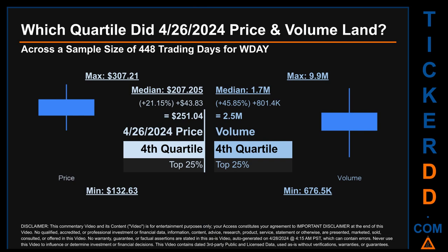Quartiles tell us about the spread of a data set by breaking that data set into quarters, just like how the median breaks the set into half. Descriptively, WDAY has a median price of $207.205. Therefore, April 26, 2024's price was higher than that middle marker by 21.15%. The day's volume of 2.5 million was more than the median by 45.85%.